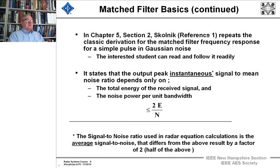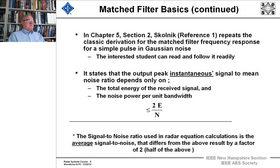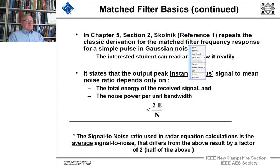Chapter 5, section 2 of the Skolnick reference repeats the classic derivation of a matched filter response for a simple pulse in Gaussian noise. It states that the output peak instantaneous signal-to-mean noise ratio depends only on the total energy of the received signal and the noise power per unit bandwidth N₀. The average signal-to-noise ratio used in radar calculations differs from the peak by a factor of 2 — that's why you see the difference between S/N and 2E/N₀.